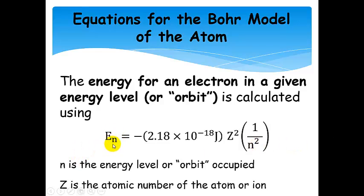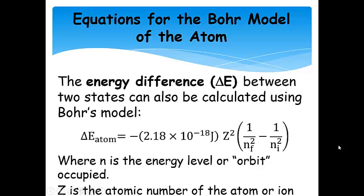Okay, so we can also calculate the energy difference between these two states. So, we basically have a modified Bohr equation, okay? So, we have, here's the same constant, same z squared, and then we have 1 over the final state squared,